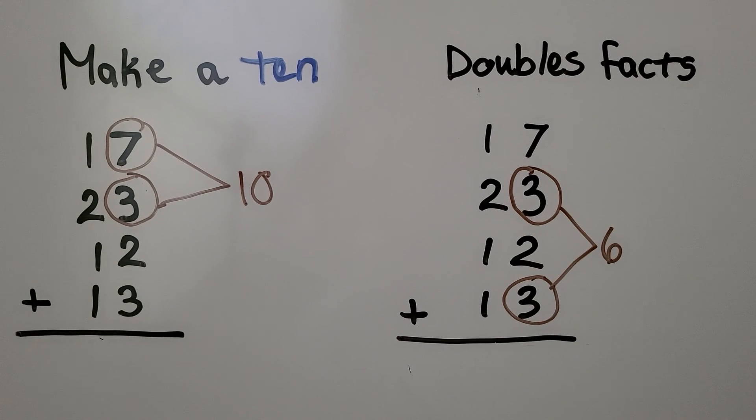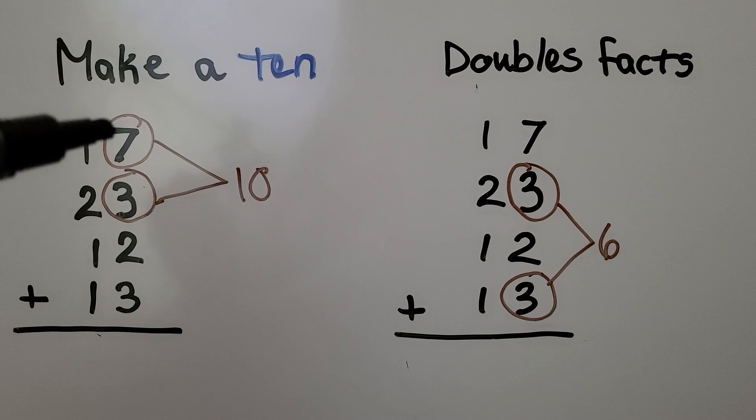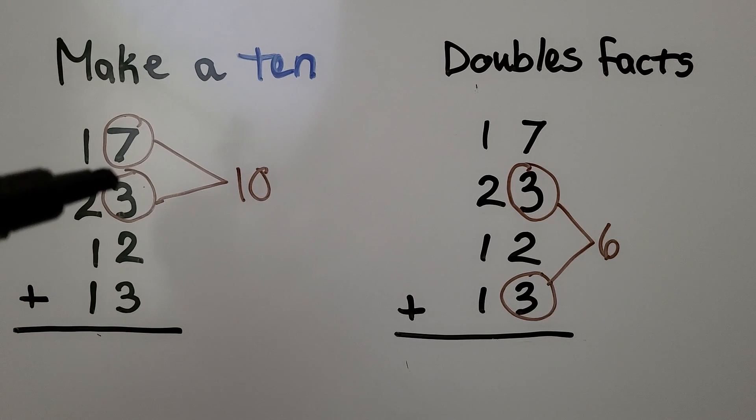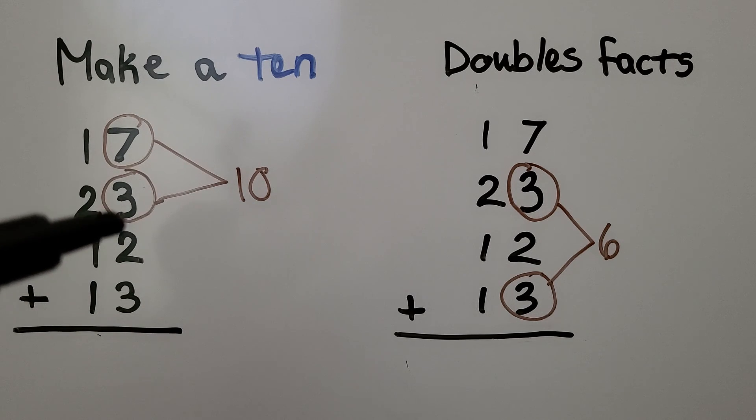When we use the strategy make a 10, we find two digits that will make a 10. 7 plus 3 is equal to 10. Then we have 10 plus two more. That's 12, 13, 14, 15.